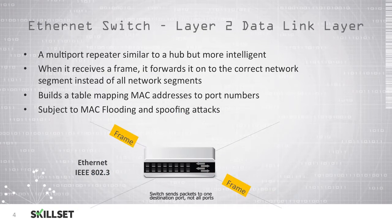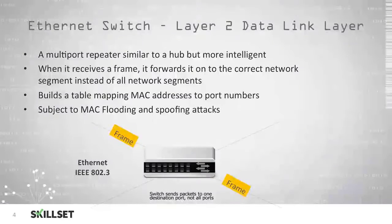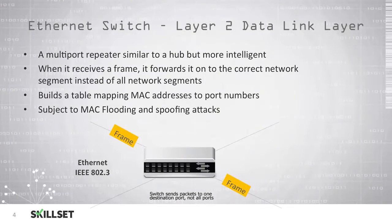An Ethernet switch is a layer 2 or data link layer device. This is a multi-port repeater similar to a hub, but is much more intelligent. When a switch receives a frame, it forwards that frame only to the correct network segment or device on the network. It builds a table which maps MAC addresses to port numbers, so the device is smart enough to know which devices are plugged into which ports and will only send data to the correct port rather than sending it to the entire network.